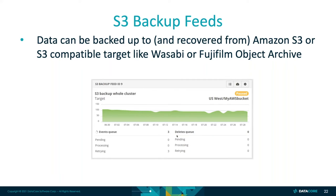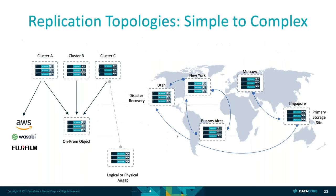How complex can you get with those replication topologies? The replication topologies we support is an M-to-N mapping. We can do it in that fashion, and you see examples of that here in these diagrams.